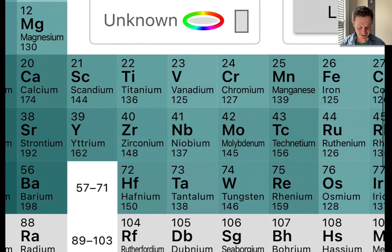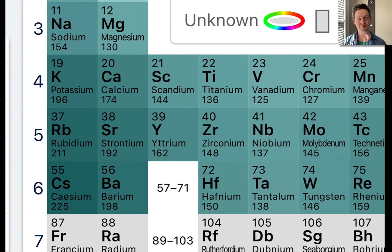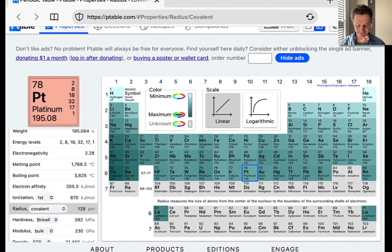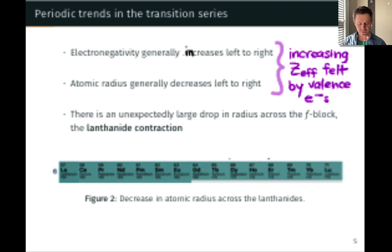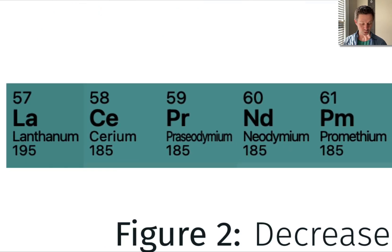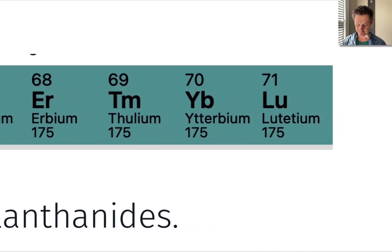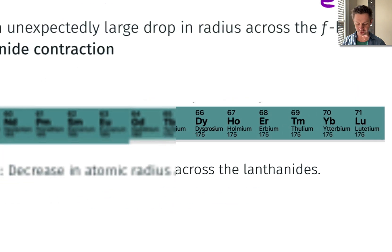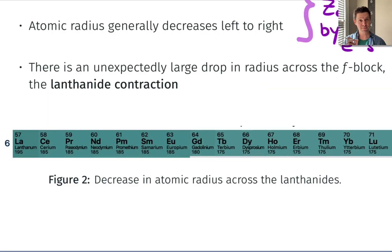What's going on here? The key is to notice that in the sixth row we have elements 57 through 71 — the lanthanides — shoved between the second and third rows of the transition series. We have a whole collection of elements between the second and third rows of the d block that affect the atomic radius. As we move across the lanthanides, the decrease in atomic radius is dramatic. There's a rather unexpectedly large drop in radius across the f block — this is known as the lanthanide contraction. Lanthanum sits at 195 picometers, and moving left to right we get a decrease to about 175 picometers for lutetium — a 20 picometer decrease across the lanthanides.